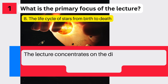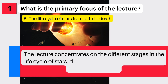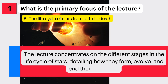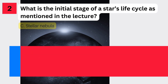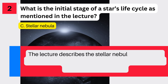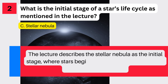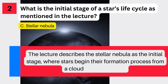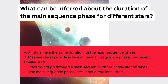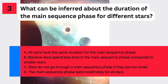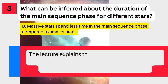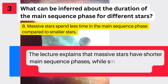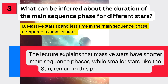Answer one: The lecture concentrates on the different stages in the life cycle of stars, detailing how they form, evolve, and end their life cycle. Answer two: The lecture describes the stellar nebula as the initial stage, where stars begin their formation process from a cloud of gas and dust. Answer three: The lecture explains that massive stars have shorter main sequence phases, while smaller stars, like the Sun, remain in this phase for much longer.